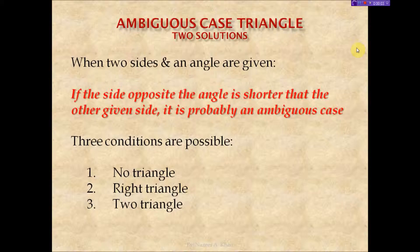Hello, my name is Nazir Khan from the Faculty of Civil Engineering Technology, and I will be presenting the ambiguous case triangle. Ambiguous case means that there is more than one solution — in this case, two solutions. The first thing we have to do is check to see if we have an ambiguous case.